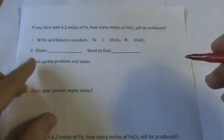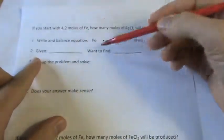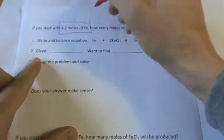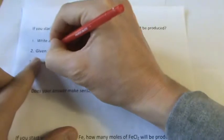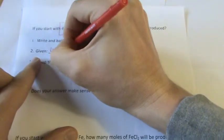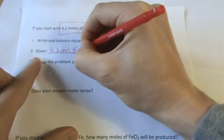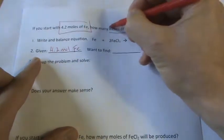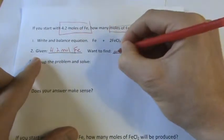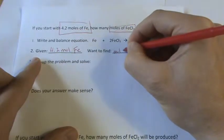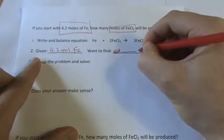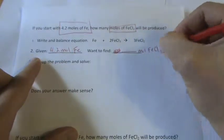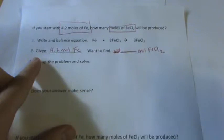So let's go ahead first and write what we're given and what we want to find. Well, they give us 4.2 moles of Fe, and we want to find moles of FeCl2. So we should just write how many moles. So we know what we're given and what we're looking for.